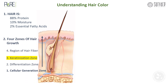There are four zones of hair growth, beginning in the cellular generation zone where the stem cells begin to multiply and push up to the differentiation zone, the keratinization zone, and ultimately the region of hair fiber.